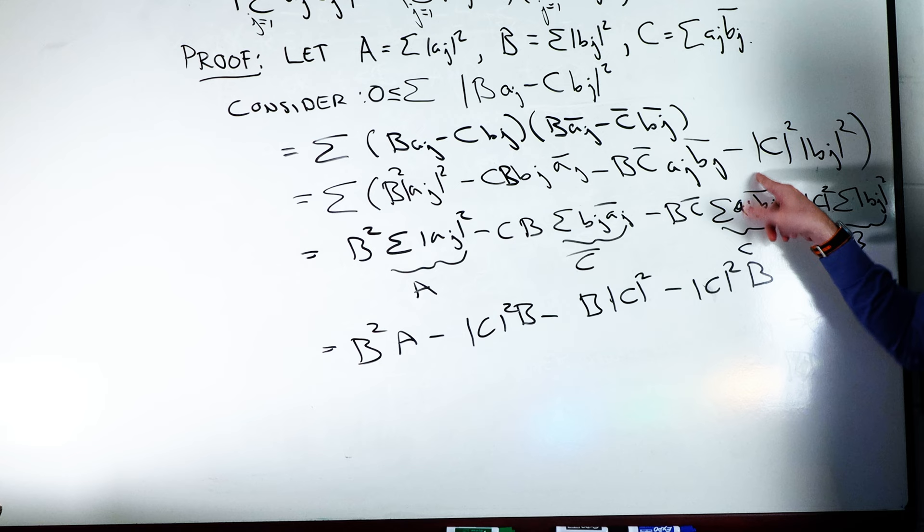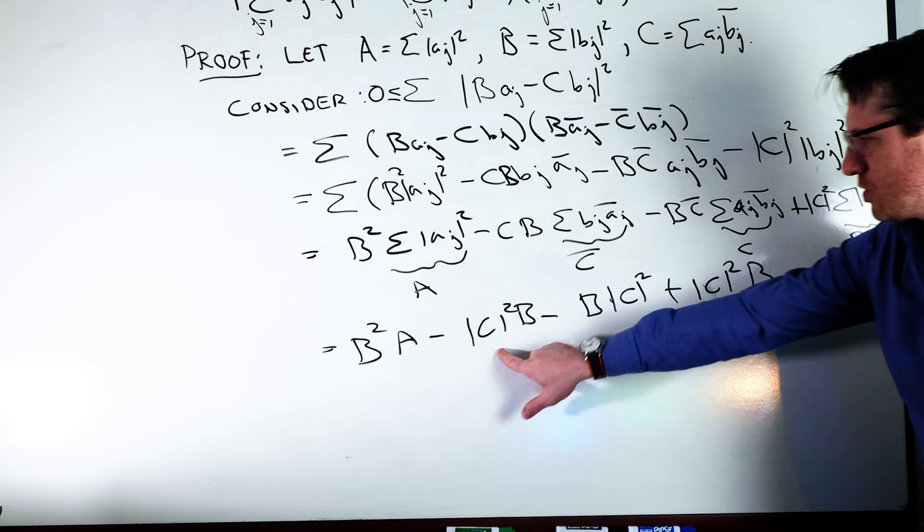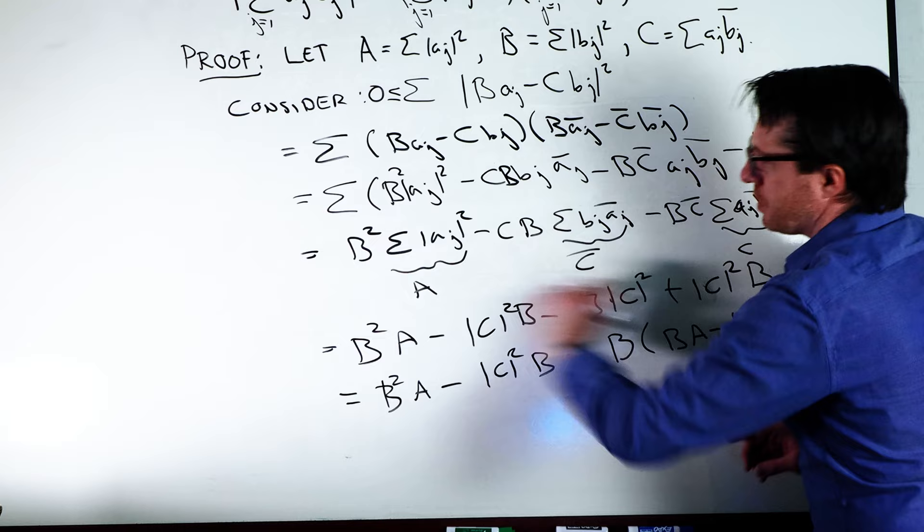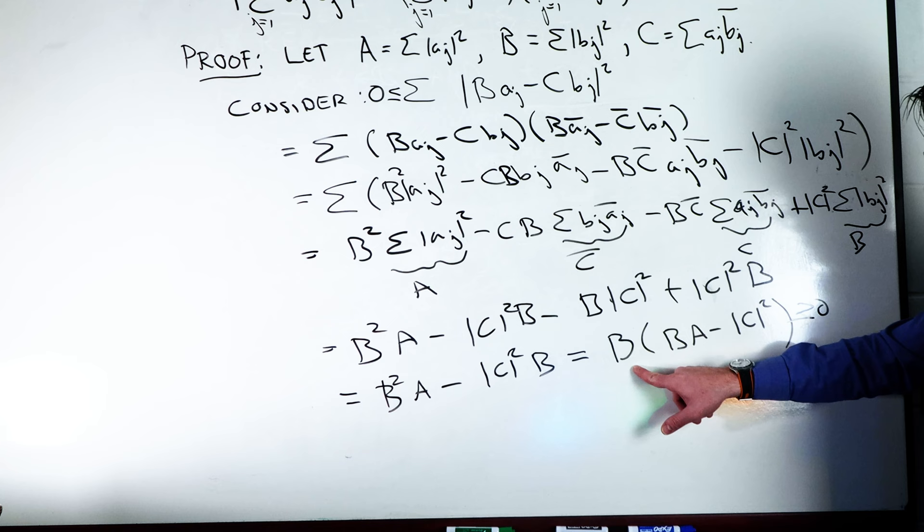This term actually should be positive. These two guys multiplied by each other, so that should be positive there. So I get 1 minus 2, and so then ultimately this gives us B^2 times A minus magnitude of C squared times B. And we can factor out a B, that gives us this. Remember, all of this chain is bigger than or equal to 0.